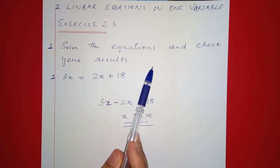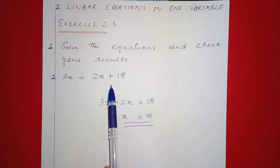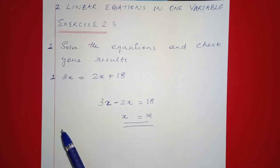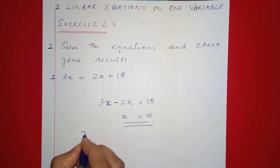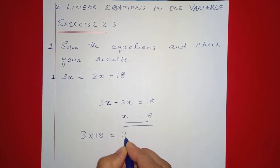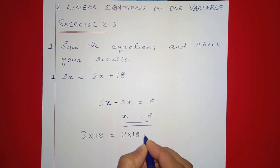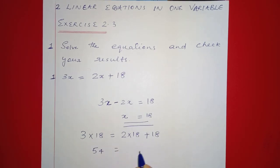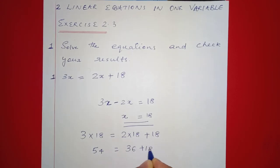The question is to solve the equations and check your results. When we solve the equations, x is equal to 18. If we check the answer, we substitute: 3 into 18 is equal to 2 into 18 plus 18. That gives us 54 is equal to 36 plus 18, which is 54.